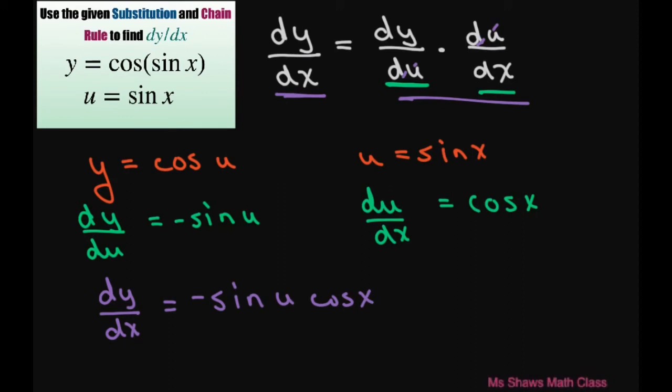And finally substitute back in your u. So our final answer is negative sine of sine of x times cosine of x. And this is going to be your final answer.